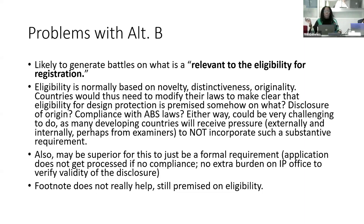Having that footnote doesn't really help because that's still premised on eligibility for registration — that's opening up a whole can of worms and creating what I think is a likelihood of considerable pressure on many developing countries not to incorporate disclosure of origin as a requirement for eligibility in their national laws. It's not there now and it would be difficult. In order to disclose, you would have to make it a requirement for eligibility in order to come within Article 3 if Alt-B is adopted. You would have to change your law, and I don't know any countries that want to do that.